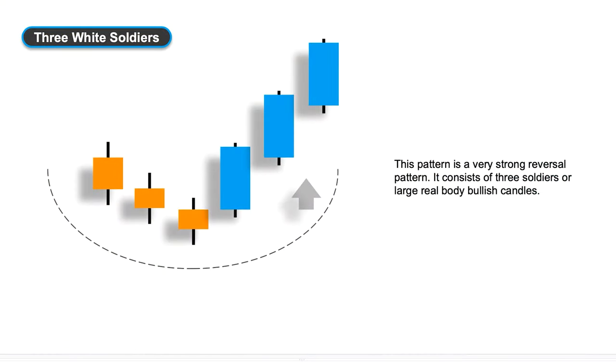The next pattern we're going to talk about is what we call the three white soldiers. The three white soldiers are a great trend-changing formation. Basically what happens is we see a downward trend and then we see three big, strong bullish candles appearing straight afterwards. That suggests that the momentum on the selling side has disappeared and the buyers have come back into the marketplace. With three strong signals we're looking at a complete change in trend — a really good opportunity to recognise that the buyers have come back in and we can see a potential long-term uptrend.